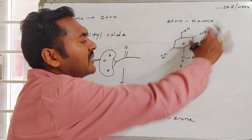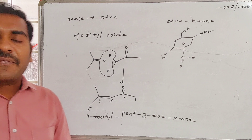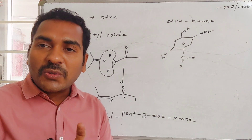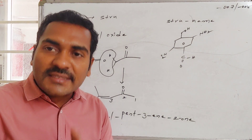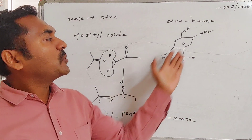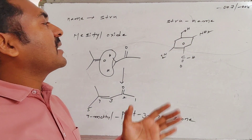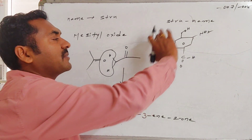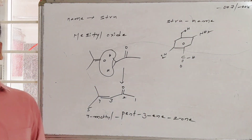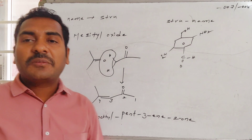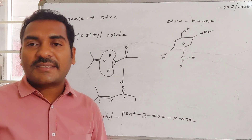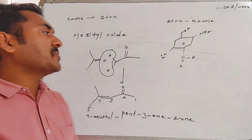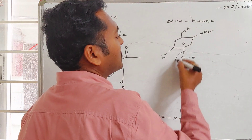Similarly, another structure asked is a benzene system having different varieties of substituent groups: an aldehyde group, a nitro group, an amine group, and a hydroxymethyl group.